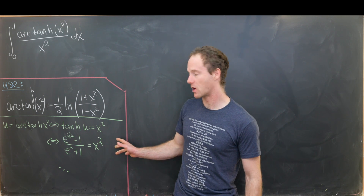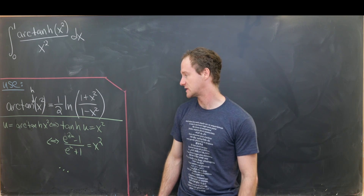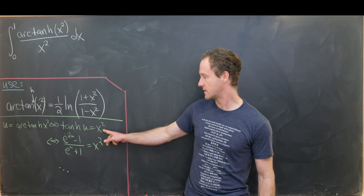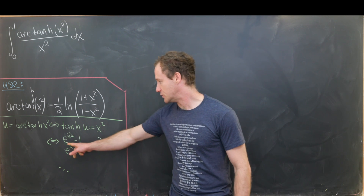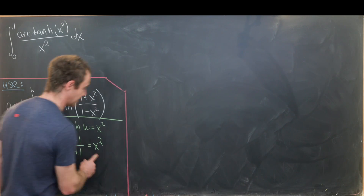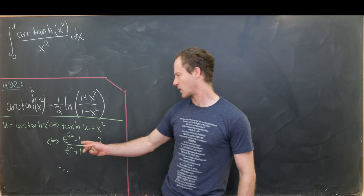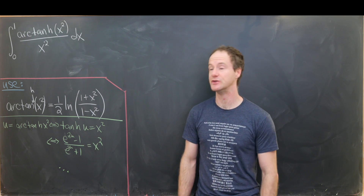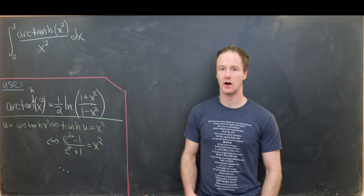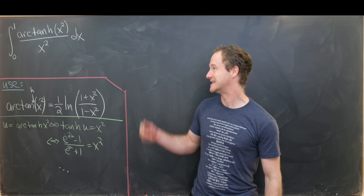The derivation of that identity goes as follows. If u equals arctanh(x²), then tanh(u) equals x². But tanh(u) equals (e^{2u} − 1)/(e^{2u} + 1), so that equals x². From here we have a rational function in e^{2u}, which can be easily solved for e^{2u}. Then take the logarithm of both sides and you're home free.